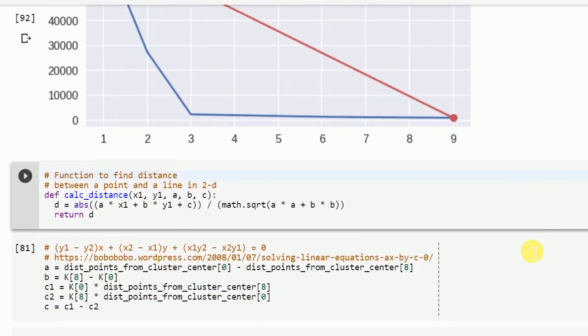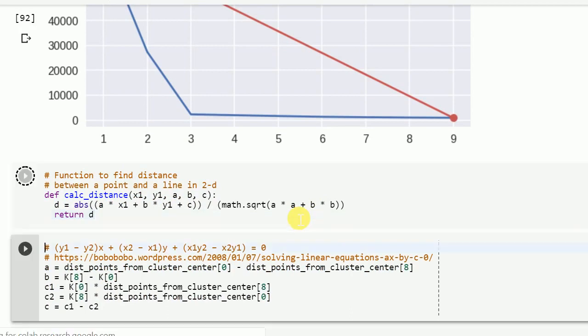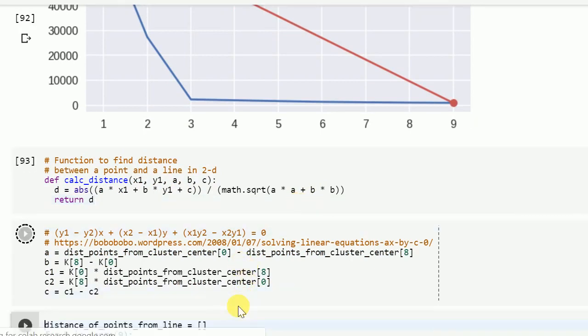So I've created a function which calculates the distance of a point from a line. Now, using the points that we have which is k8 and k0, which is the first point at k equal to 1 and the last point which is at k equal to 9, I create a straight line using this equation.